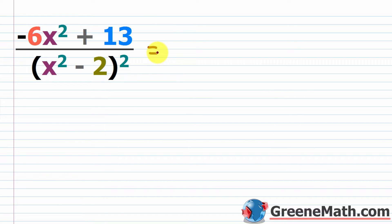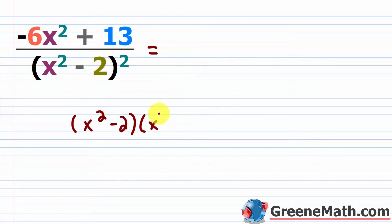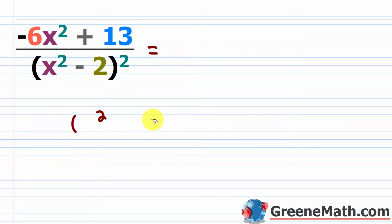When you set up a problem like this, the first thing you're going to check is to make sure you have a proper fraction. The degree in the numerator is two. The degree in the denominator, if you were to expand this x squared minus two times x squared minus two, you'd have a fourth degree polynomial. So the degree in the numerator is two, the degree in the denominator is four — so you have a proper fraction. We don't need to expand it because it's more convenient to keep it factored.